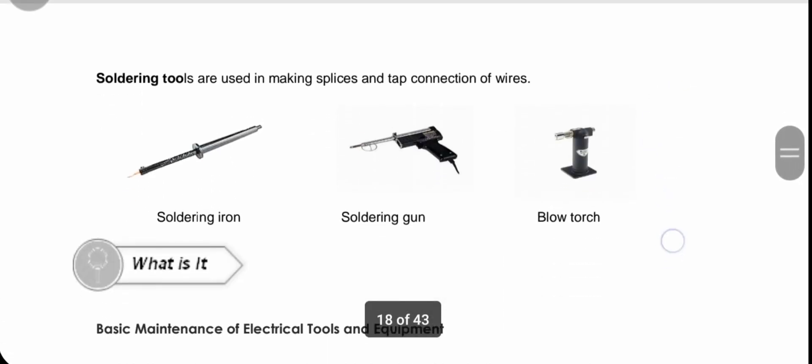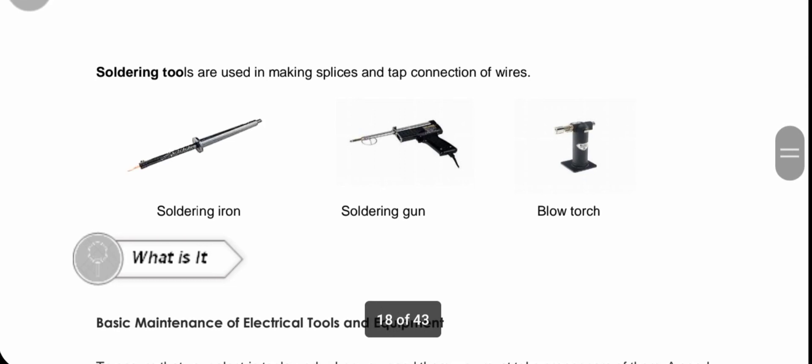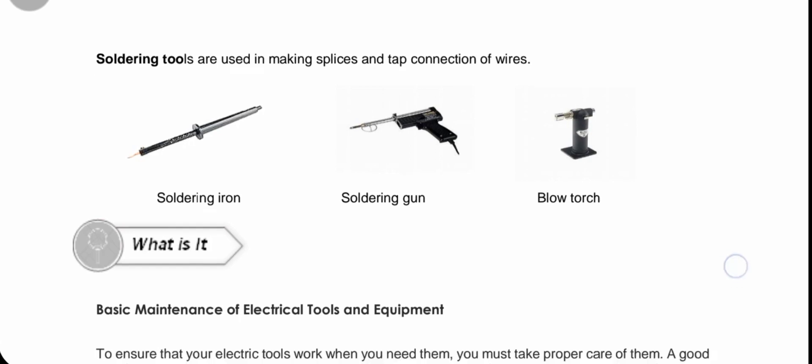Lastly, we have soldering tools, which are used to make splice and tap connections of wires. We have the soldering iron, the soldering gun, and the blowtorch. These are the types of tools we can use to solder a wire or anything that we need to connect together. Those are our basic tools.